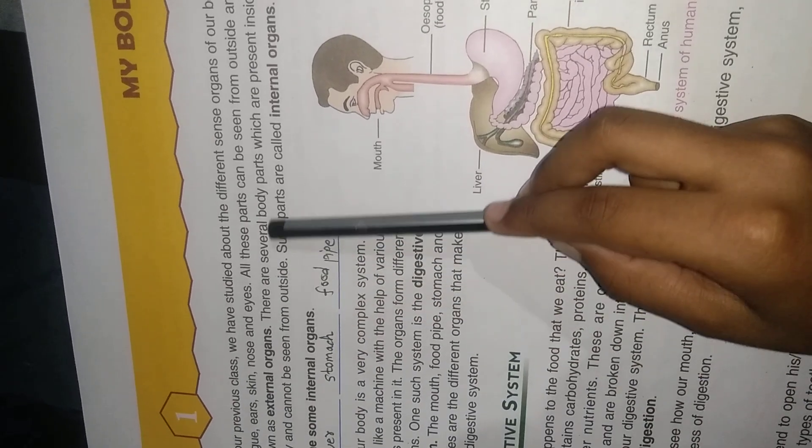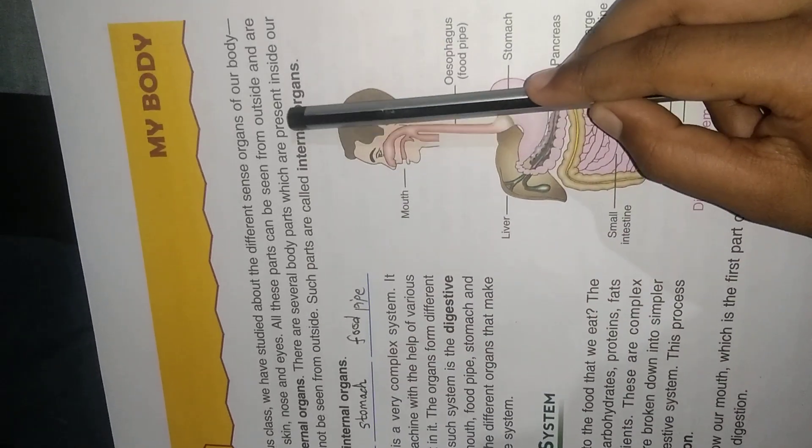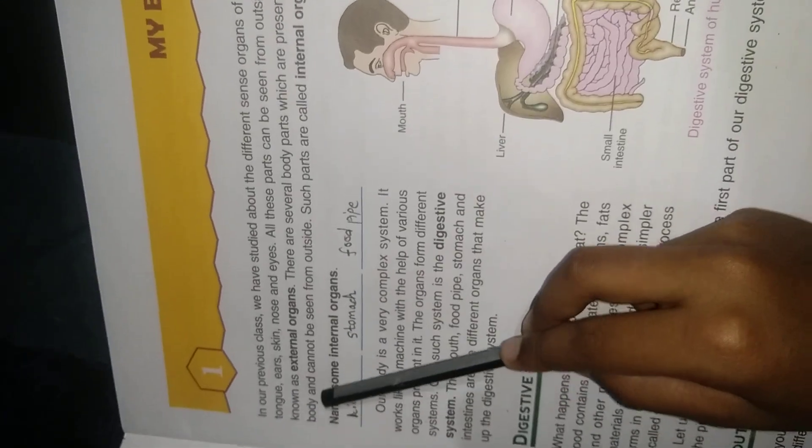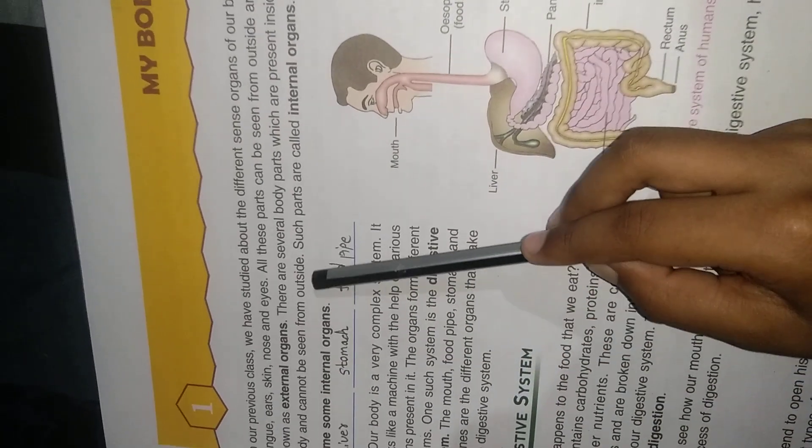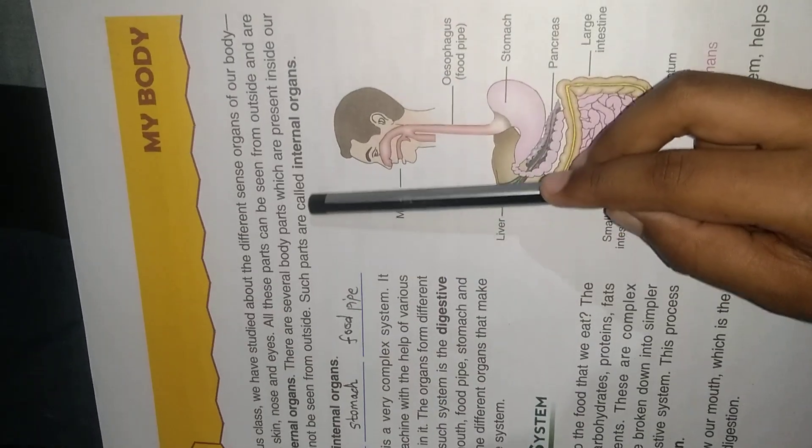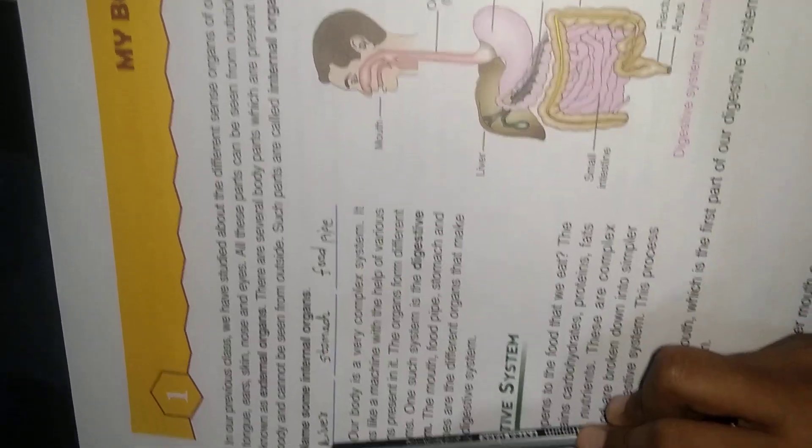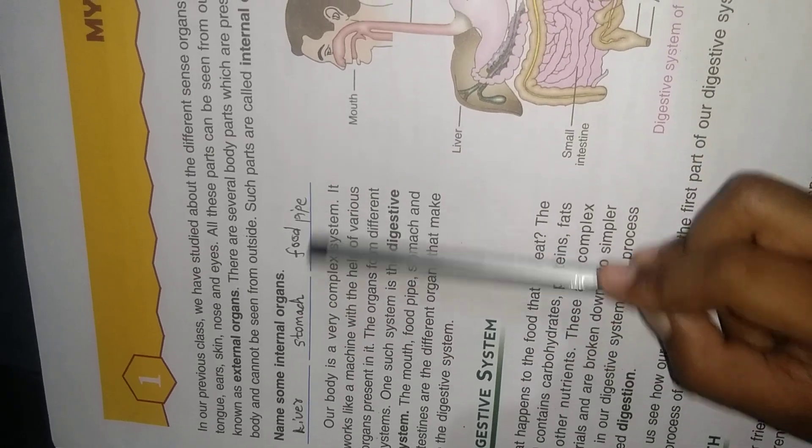There are several body parts which are present inside our body and cannot be seen from outside. Such parts are called internal organs. Name some internal organs: liver, stomach, food pipe.